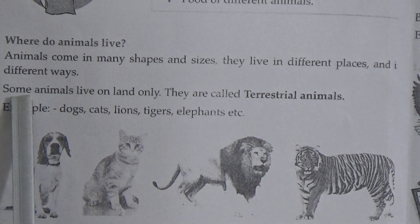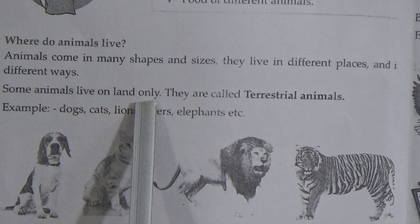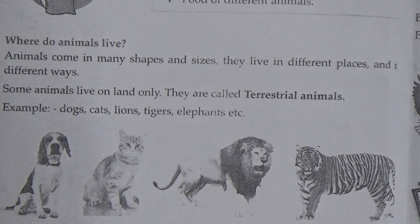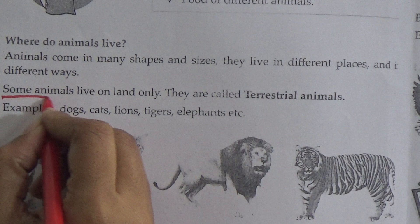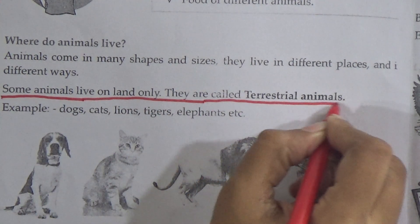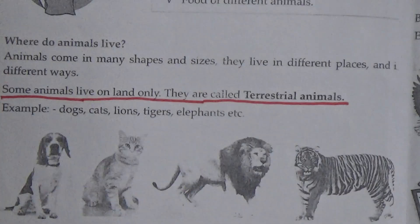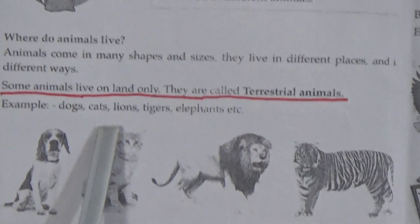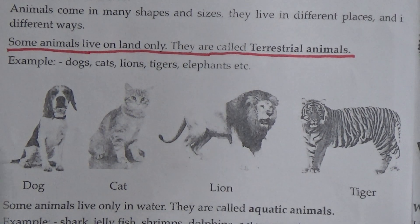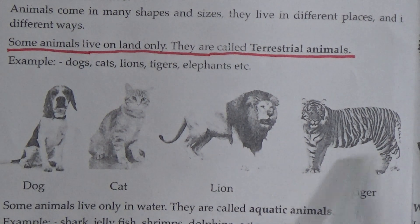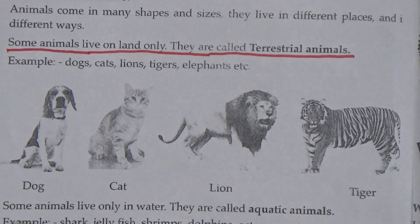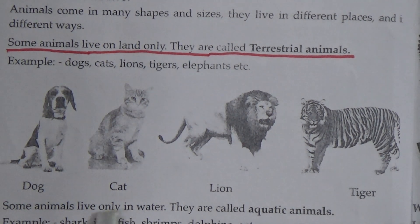Where do animals live? Animals come in many shapes and sizes. They live in different places and in different ways. Some animals live on land only — they are called terrestrial animals. This is a very important line: animals that live on land are called terrestrial animals. Examples: dog, cat, lion, tiger, elephant, etc. This is the picture of terrestrial animals — dog, cat, lion, tiger.